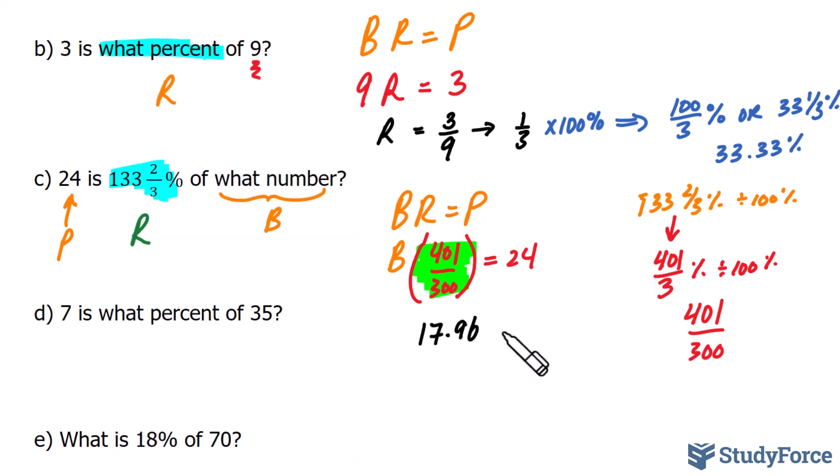17.96 is the base value. So to help you understand, if you start off with 17.96 and you want to find 133 and two-thirds percent of that, it will result into 24.